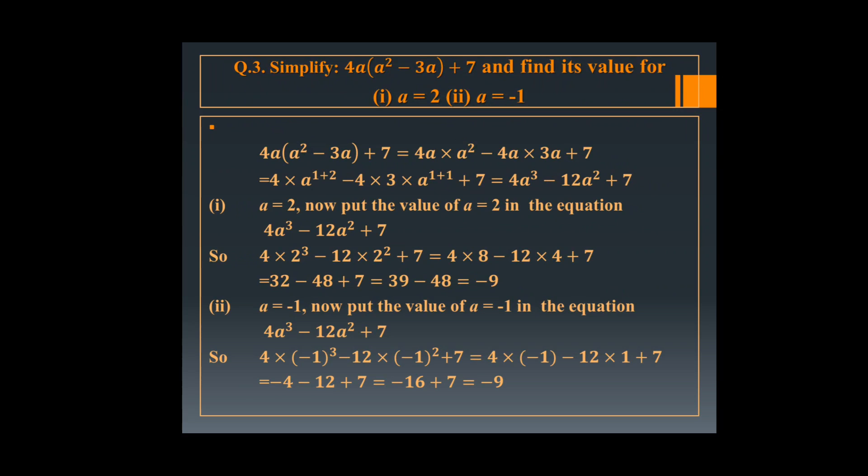Now put the value of A equal to minus 1. Here A cube means minus 1 cube, and A square means minus 1 square. If you multiply a negative sign an even number of times — 2 times, 4 times — the sign becomes positive. So 4 into minus 1 gives minus 4, minus 12 into 1 gives minus 12, plus 7. So it is minus 16 plus 7, which equals minus 9.